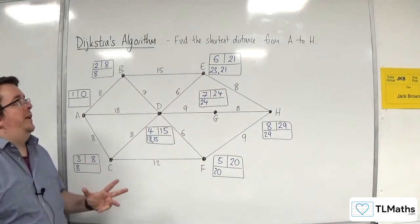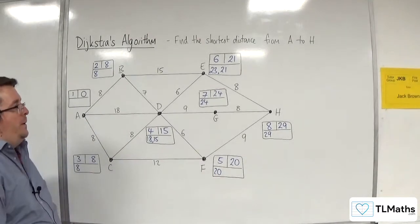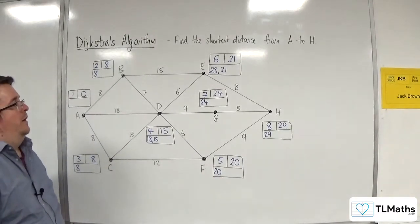So I know that the shortest distance from A to H is 29. So now I want to find the route that gets me there.